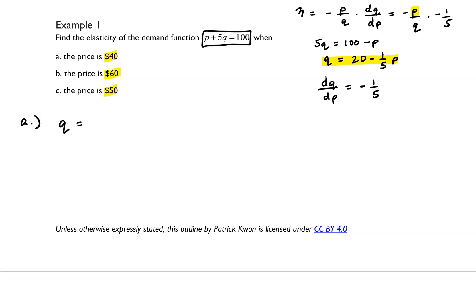So let's do part a. q is going to equal 20 minus 1 fifth p, but I want to evaluate it for when the price is 40, so q is equal to 20 minus 1 fifth times 40, and that gives us 20 minus 8, which gives us 12, so that means that our eta value is going to be negative 40 over 12 times negative 1 fifth, and that is going to be 2 thirds. So for this one, eta is equal to 2 thirds.